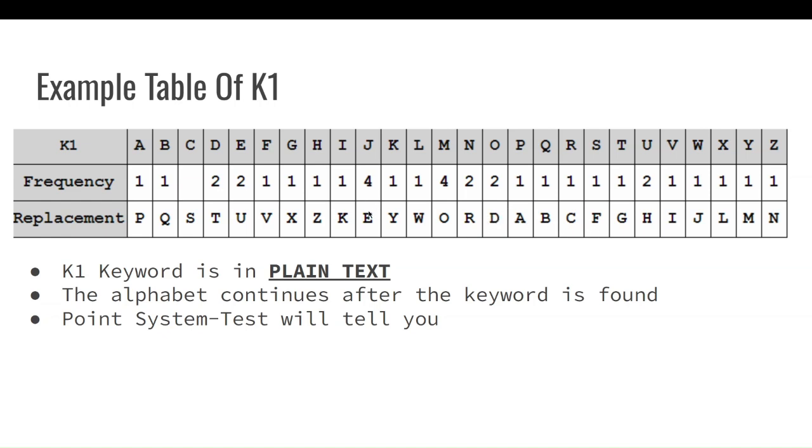So, since we already have D over here and E over here, A, B, C, we skip D and E, F, G, H, I, J, and then we get the K in our keyword, so we skip it along, go to L, and so on and so forth.